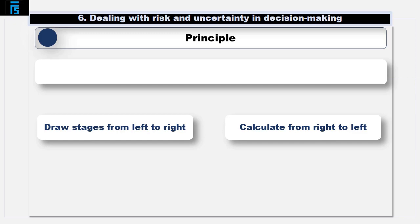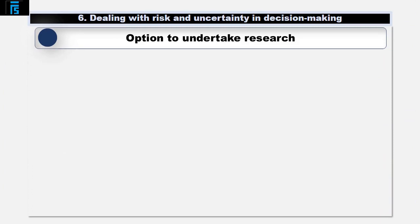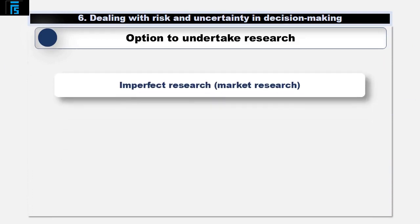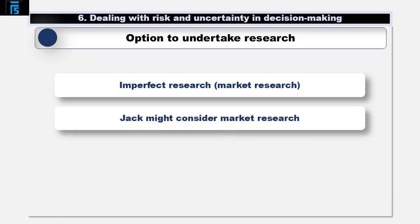Often in questions, the option will be given to undertake further research before committing. Typically this research is imperfect — in other words, it reduces uncertainty but doesn't eliminate it, such as market research. Jack, for example, might consider undertaking market research before committing to opening his new shop.